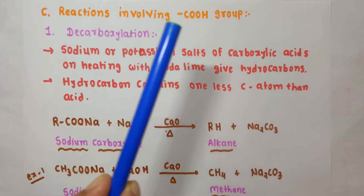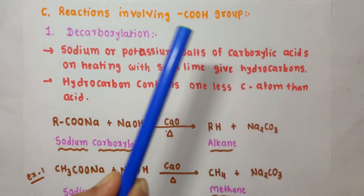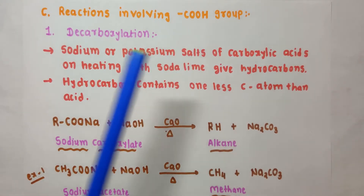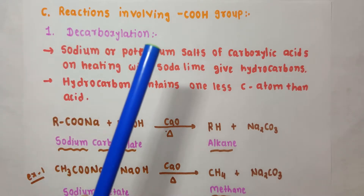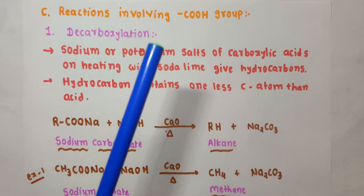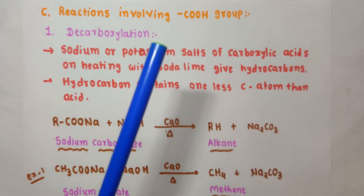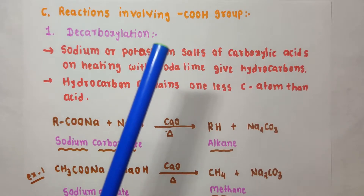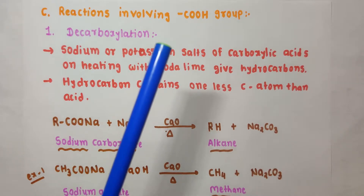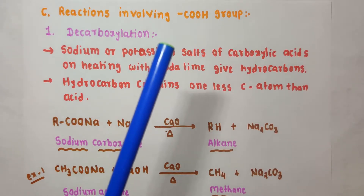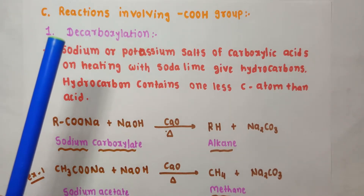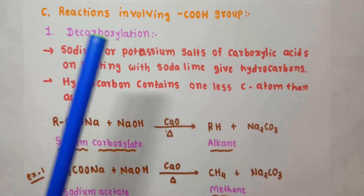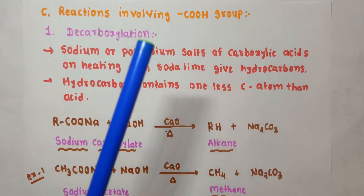Now let us see reactions involving the COOH group. The first reaction is decarboxylation. One type of decarboxylation reaction you have already learned in class 11th, which is Kolbe's electrolytic reduction — that was also a decarboxylation reaction. Here we are going to learn one more decarboxylation reaction.